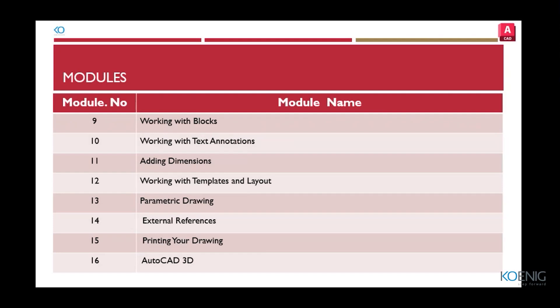Each of the 16 modules covers specific aspects of AutoCAD comprehensively, allowing learners to progress from basic skills to more advanced techniques and projects. It provides a structured approach to learning the software, and as you progress, you can explore more advanced topics and specialized features based on your specific industry or discipline.